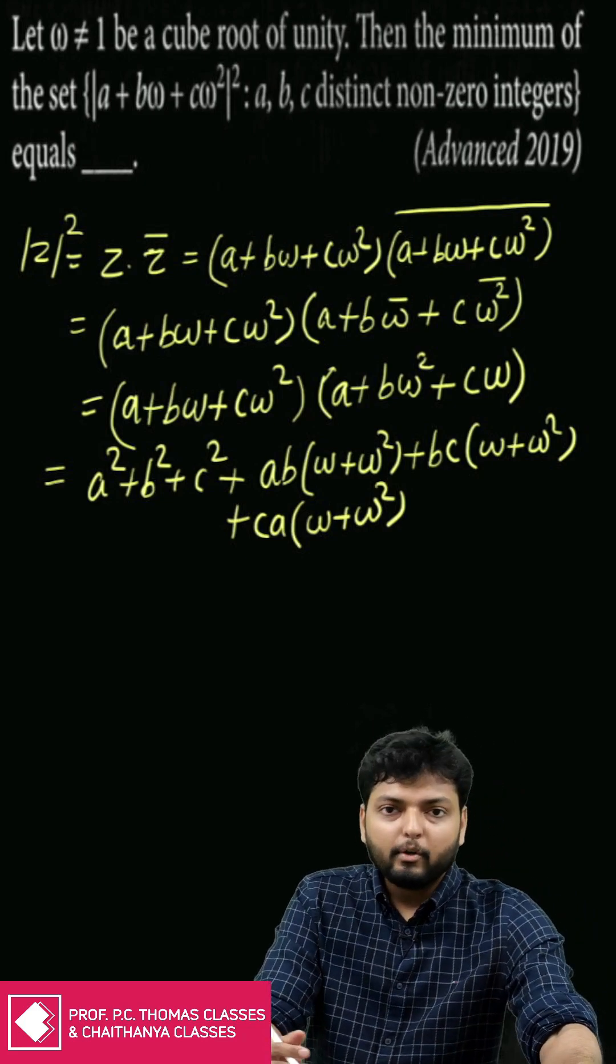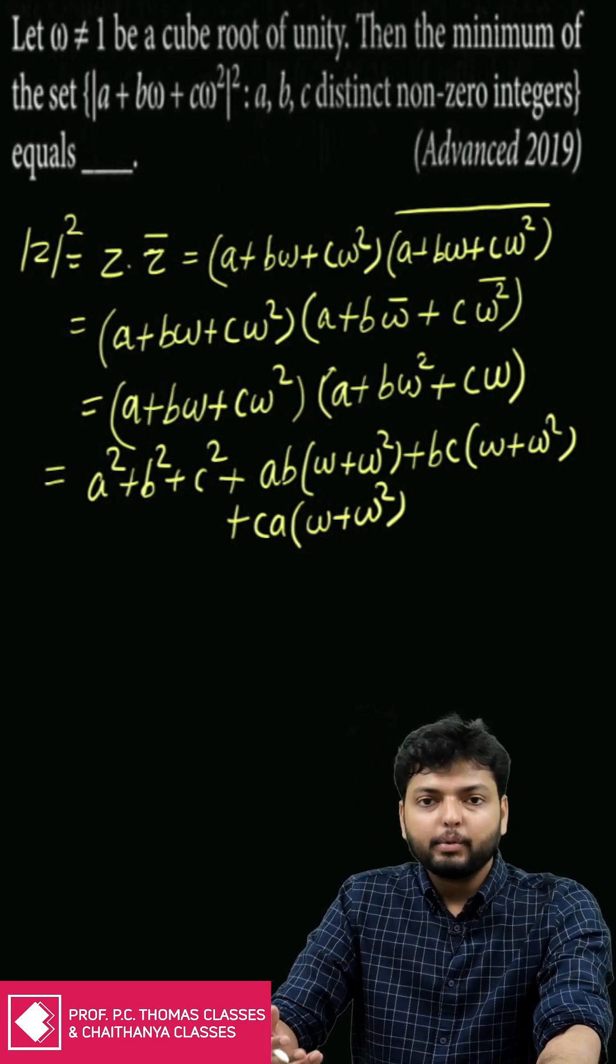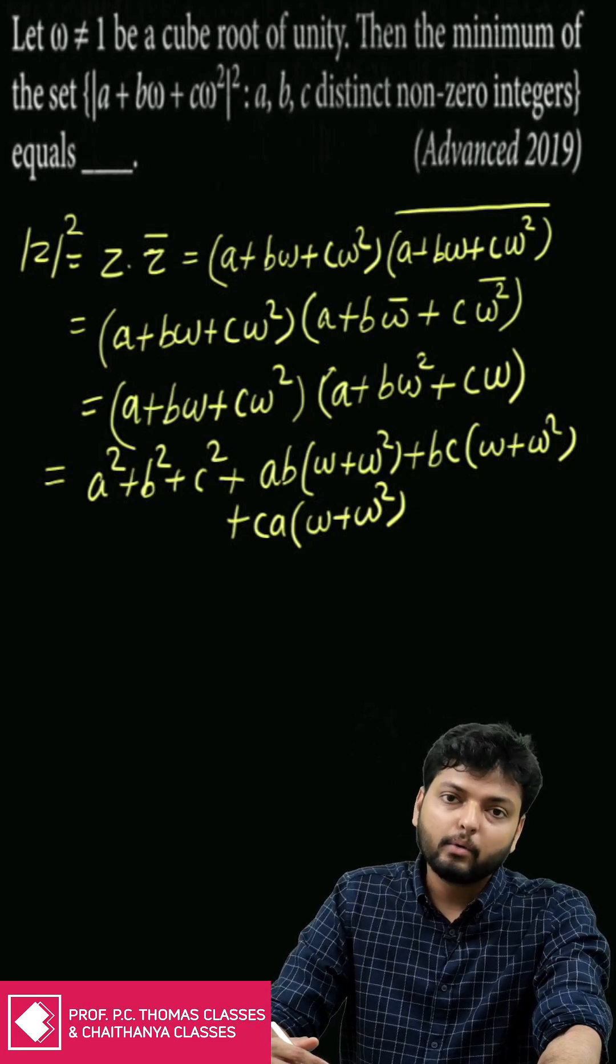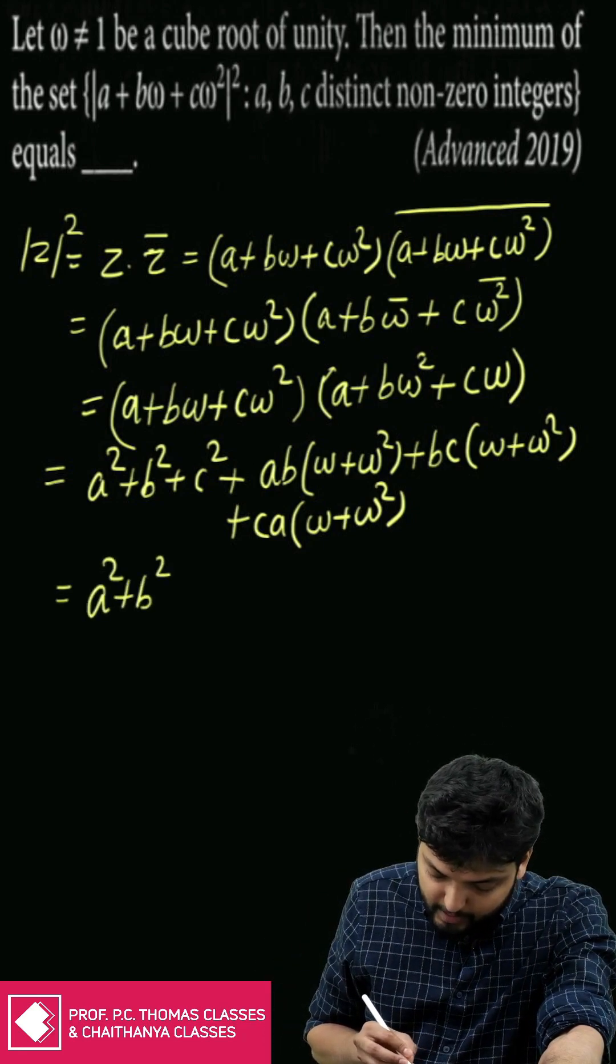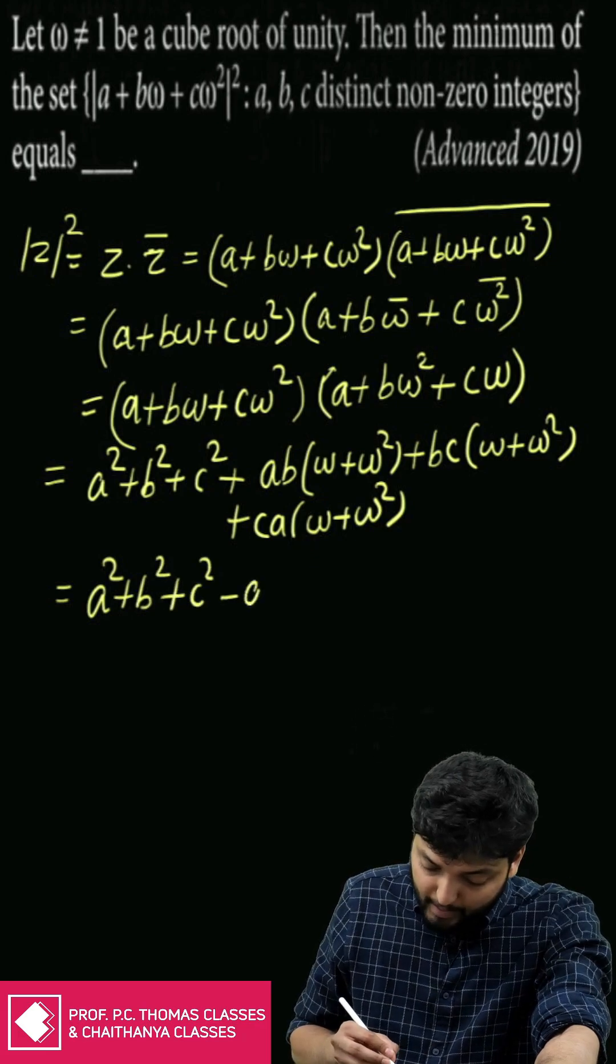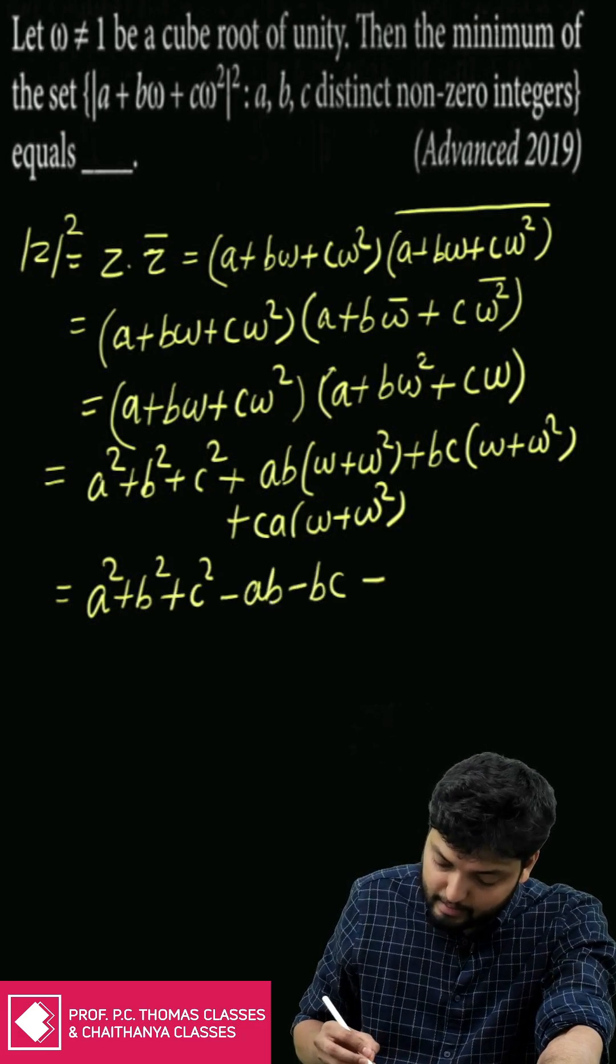But we know 1 + ω + ω² equals zero, so ω + ω² will be equal to minus one. This will become a² + b² + c² - ab - bc - ca.